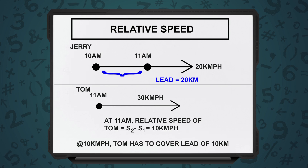At what time will Tom overtake Jerry? Remember, Jerry started moving at 10 a.m. and Tom started moving at 11 a.m. Which means in the first 1 hour, Jerry was moving at a speed of 20 km per hour, so Jerry covered a distance of 20 km. This is the lead that Jerry has over Tom.